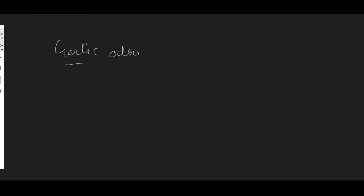Garlic has a characteristic garlic odor, which is due to the presence of prop-2-en-1-thiol. So in onion it was propane-1-thiol, and in garlic it is prop-2-en-1-thiol. Another important point: LPG cylinders contain liquefied petroleum gas, which has no smell of its own. To detect leaks, since LPG is highly flammable, a small amount of ethanethiol is added to the LPG cylinder.